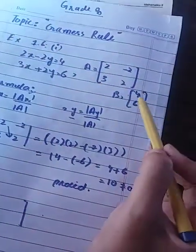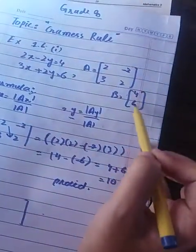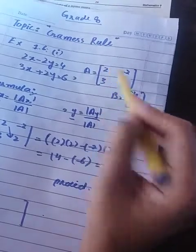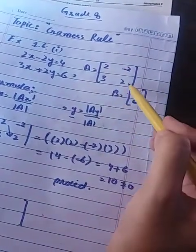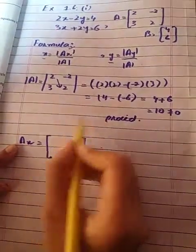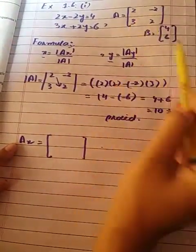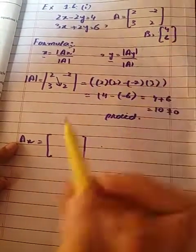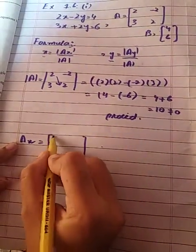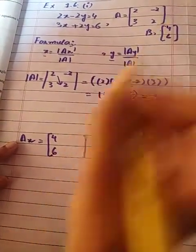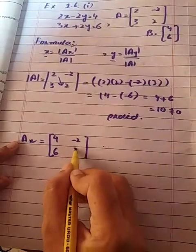You replace the first column with the b column values. In set A, in place of the first column, you replace with the b column values 4 and 6. The rest of the matrix stays as it is. This is Ax.